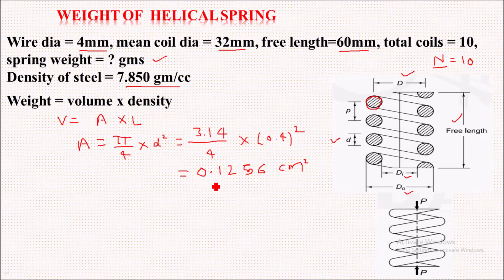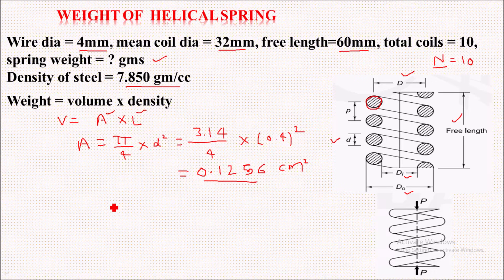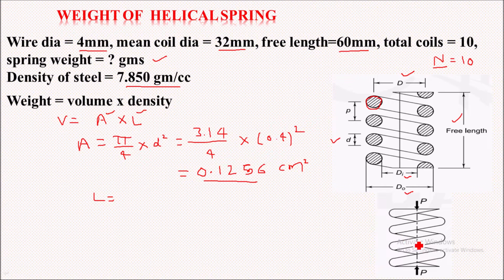0.1256 is the cross-sectional area we get on solving this. Now we have to calculate the length of the spring. Here, the length of the spring is not the free length — we have to calculate the total length of each coil.